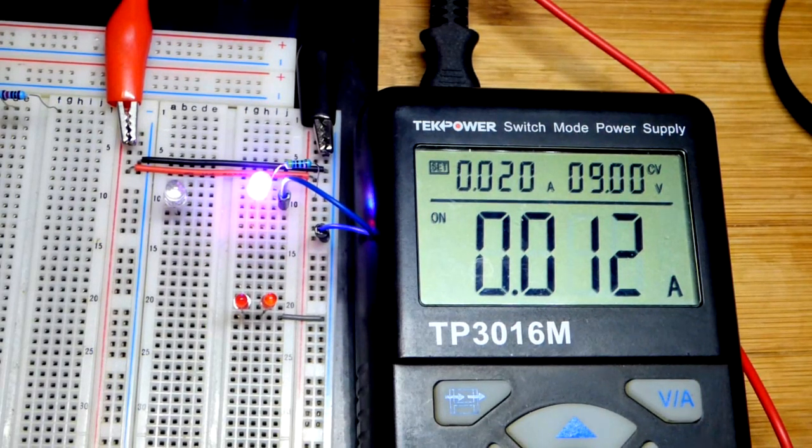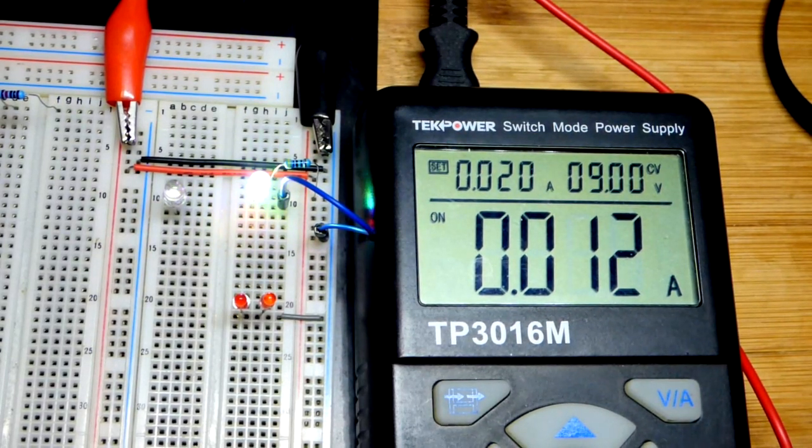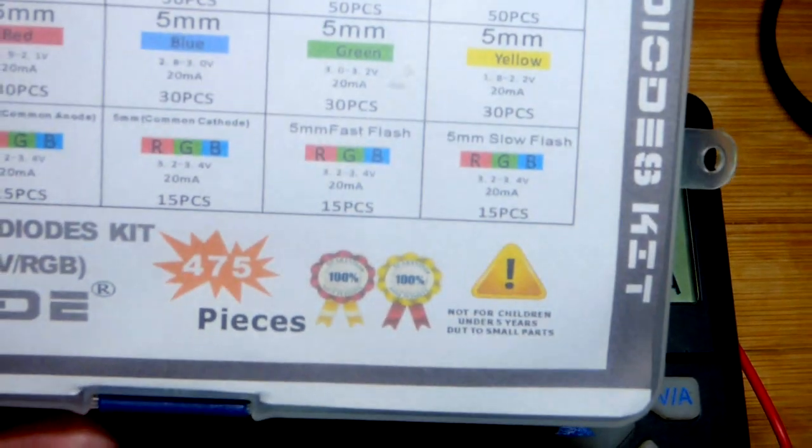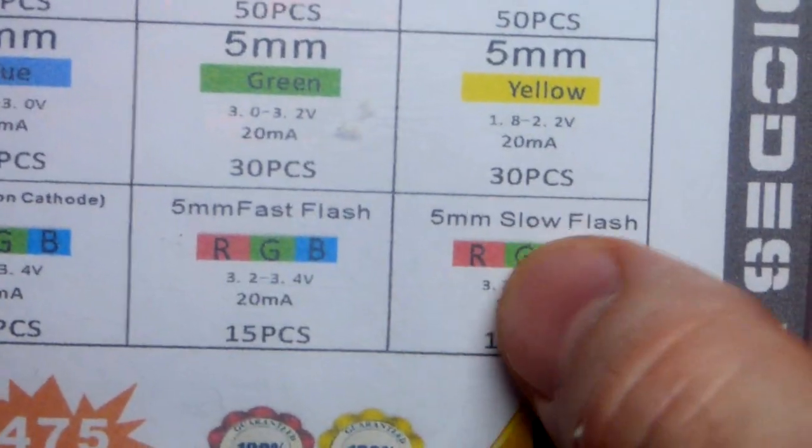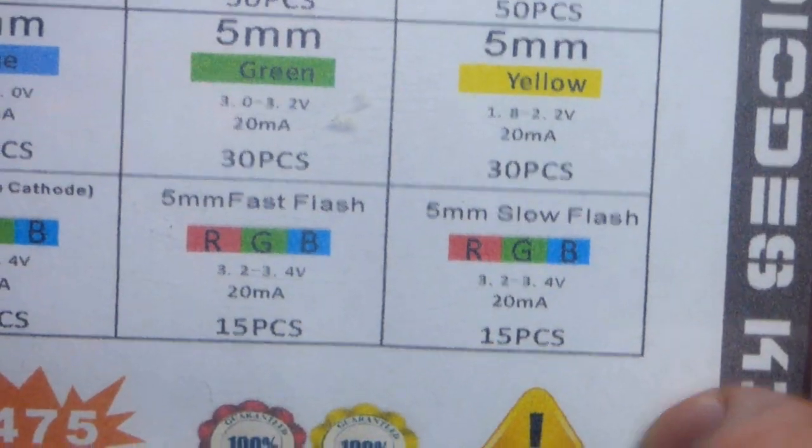In this video, I'll take a look at a couple of interesting LEDs. I got them from this kit. The one on the board right now is the 5-millimeter slow flashing LED, maybe called blinking instead of flashing.